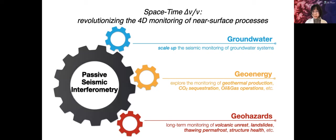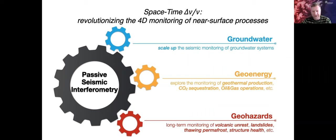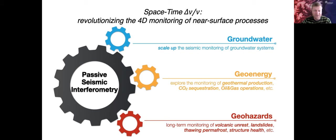I'd be happy to answer your questions. Thank you, Shujan, very much — wonderful talk. We've had a number of questions come in on various aspects of your very exciting work, so we'll try to get through as many of these as we can. One of the questions that came up a couple of times related to the seismic instrumentation and network you use. You had a figure showing an estimate of your resolution and how that varied with station density. Could you comment on whether there is a minimum station density needed? Say you had three stations 100 kilometers apart — could you do anything with that?